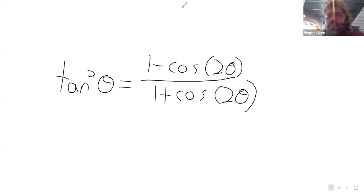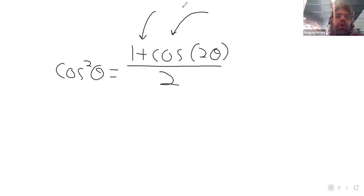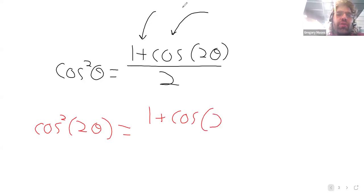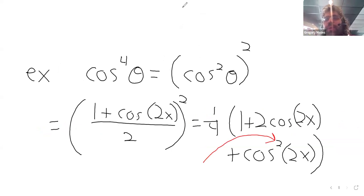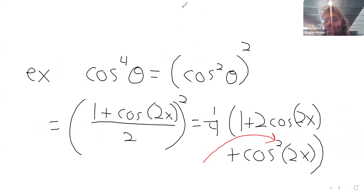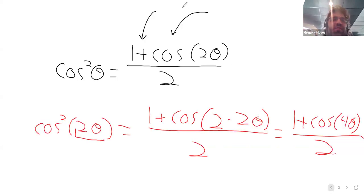But these formulas work if instead of having theta, we have something like 2 theta. Well, it's 1 plus the cosine of 2 times, now instead of theta, we have 2 theta divided by 2. So now we can go back here and where this cosine squared of 2x appears, we can use this formula.